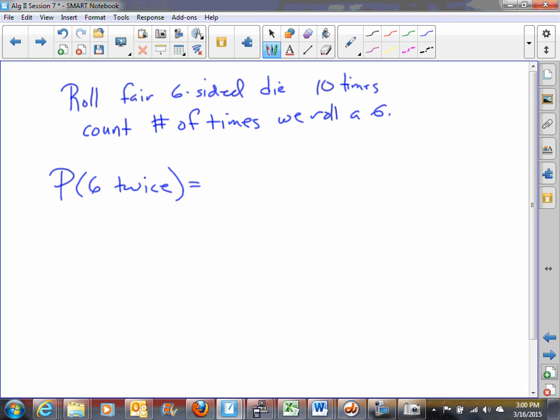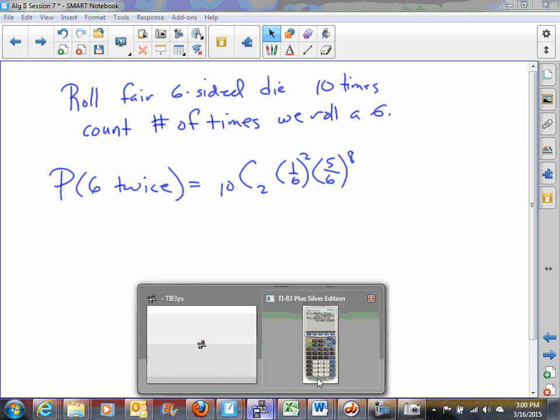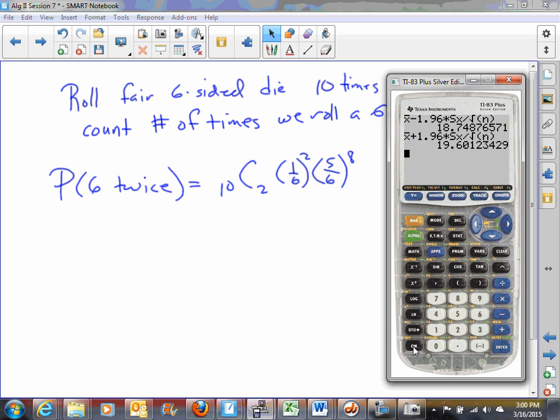Well, according to our formula, it's going to be 10 choose 2 times one-sixth to the two times five-sixths to the eight. Now let's just pull up the calculator and see what we get here. 10 choose 2 times one-sixth to the second times five-sixths to the eighth.